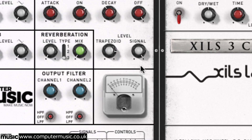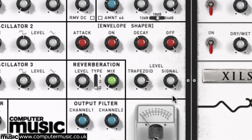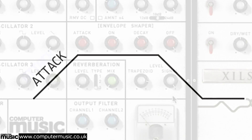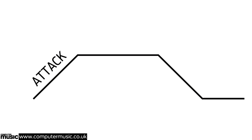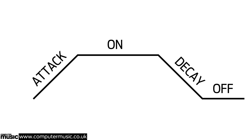The EMS-style trapezoid envelope generator also has four stages, but only one — attack — behaves as you'd expect if you are only accustomed to the ADSR variety. On the EMS VCS3 and Synthi, the other three stages are: on, decay, and off.